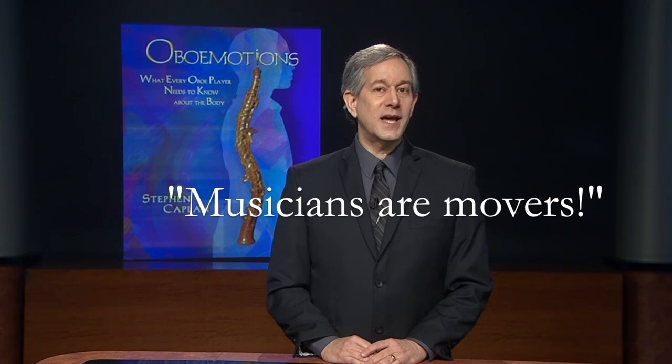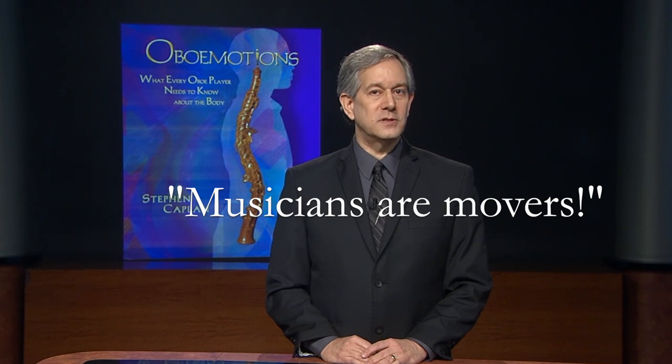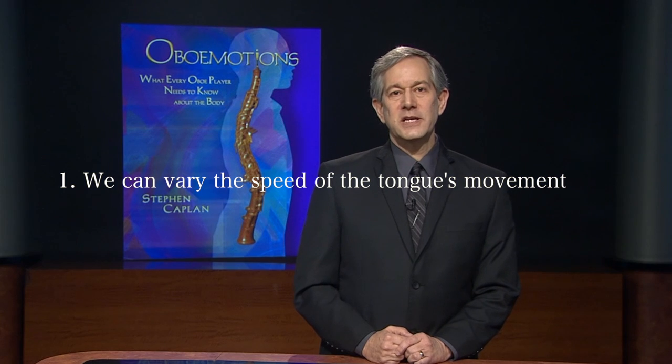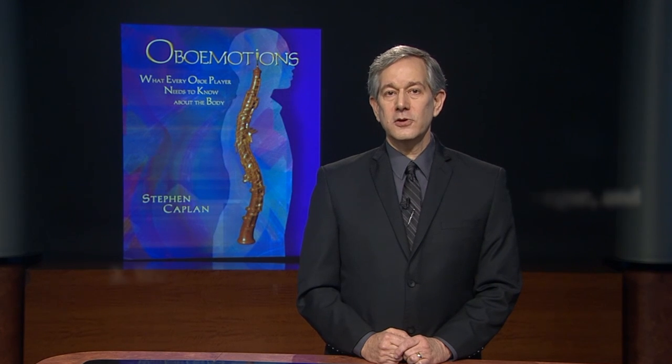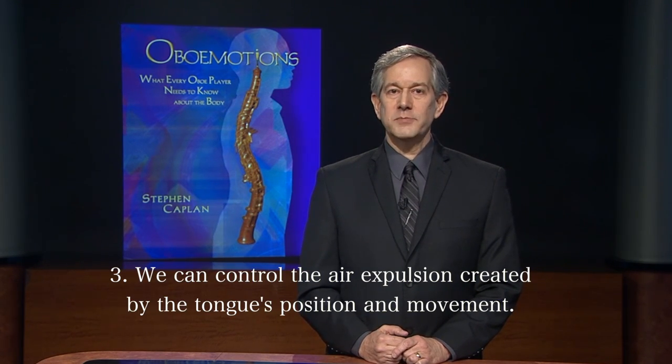Musicians move in order to make music. So when we are precise about the language we use to describe movement, then we will more precisely be able to attain the musical result. In order to achieve the precise articulation the music requires, there are three things we can do: first, we can vary the speed of the tongue's movement; second, we can change the position of the tongue; and third, we can control the air expulsion created by the tongue's position and movement. I invite you to read more about these three ways of better understanding articulation by reading the chapter on the tongue in my oboe motions book.